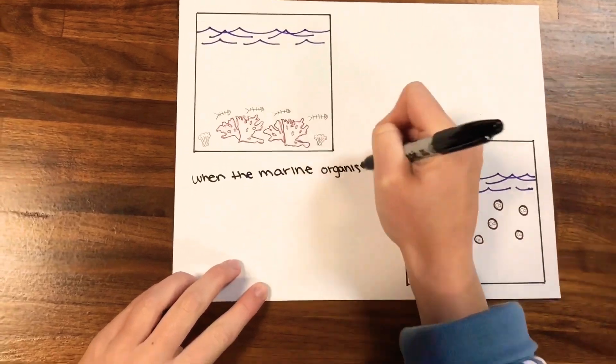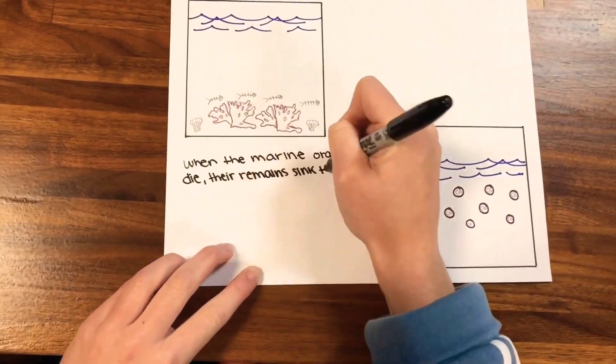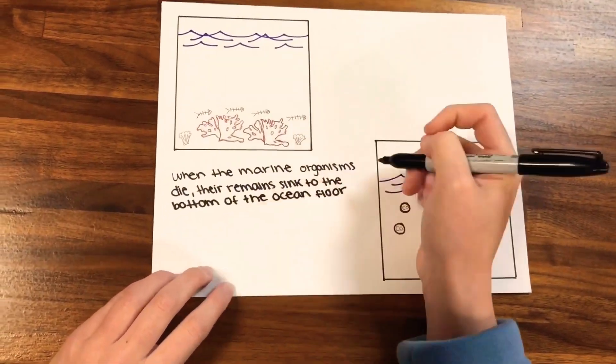When the marine organisms die, their remains sink to the ocean floor and are incorporated into the seabeds and coral reefs.